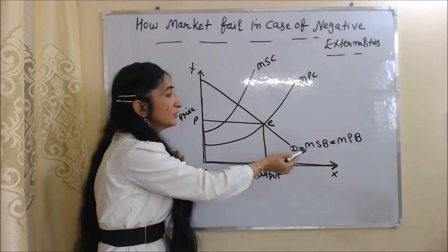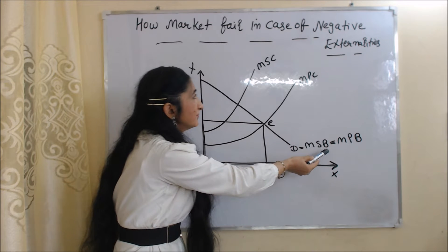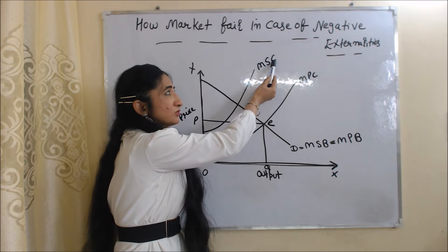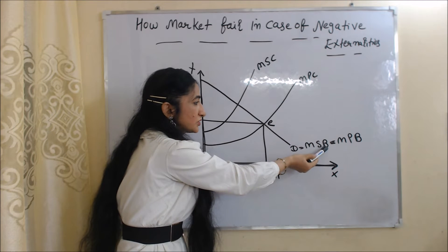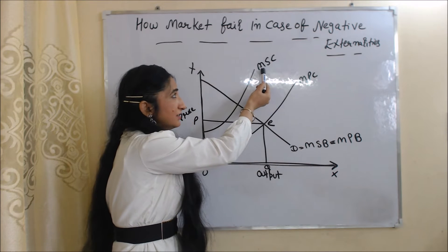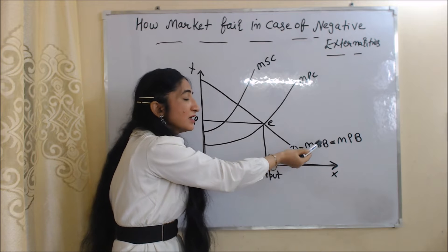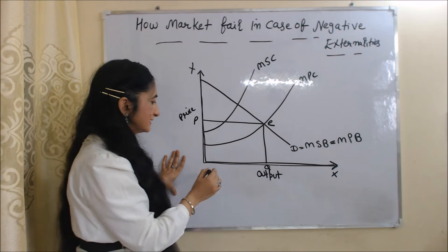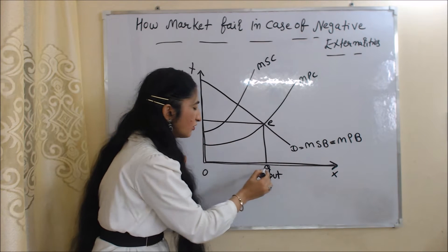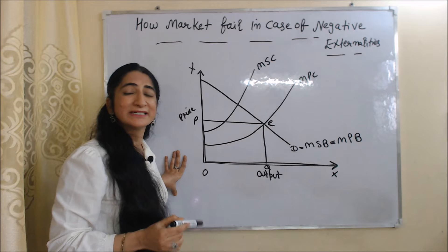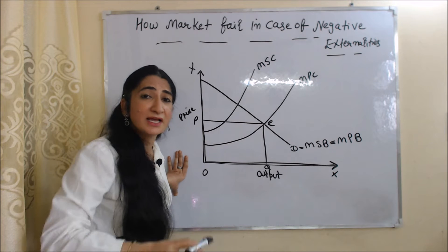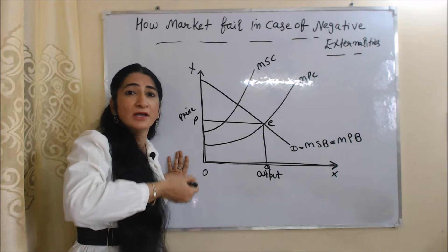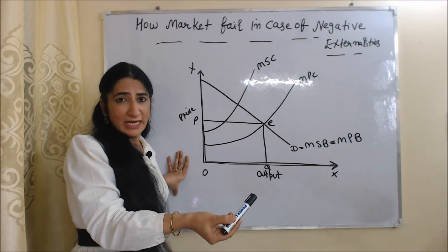At the OQ amount of output, marginal social benefit is less than marginal social cost — you can see marginal social cost is more than marginal social benefit. So we can say that this OQ amount of output is creating negative externalities and giving a lot of loss to society.